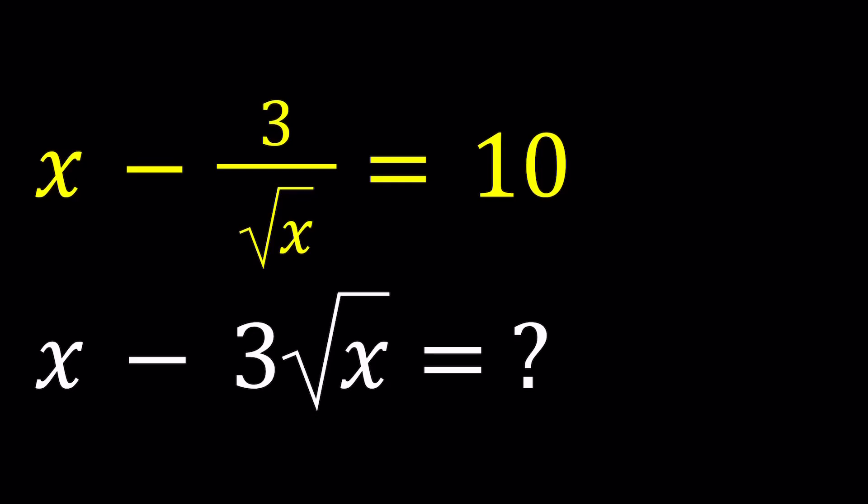Hello everyone. In this video we're going to be dealing with radical expressions. We have an equation and we're supposed to evaluate another expression and they're both radicals. How radical can this be, right? So we have x minus 3 divided by the square root of x equals 10, and for particular values of x that satisfy the first equation, we want to evaluate x minus 3 times the square root of x.